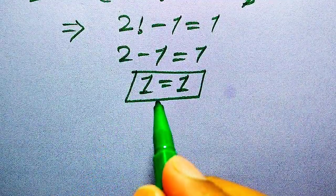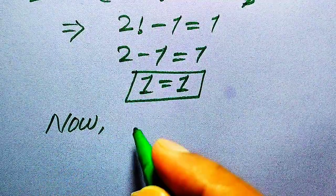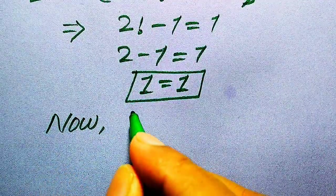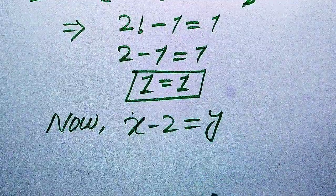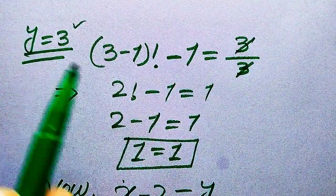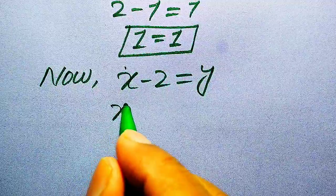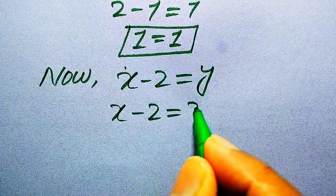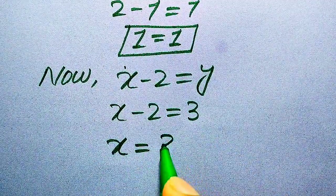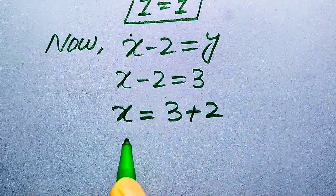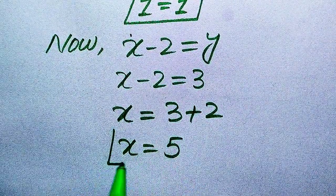Now we substitute back. Recall that y equals x minus 2, and y equals 3, so x minus 2 equals 3, which gives x equals 3 plus 2, therefore x equals 5.